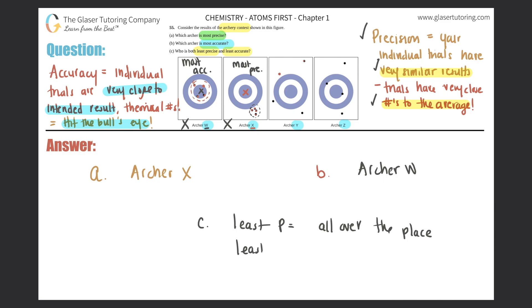And least accurate means not close to the intended target — the bullseye. So archer Y or archer Z — which one would be the least of all? It would definitely be archer Y, because he didn't even hit the bullseye and he's not even hitting within the whole diagram — shots are out of the board entirely. Archer Z at least got two shots in, so he's a bit more accurate and more precise than archer Y, who is all over the place.